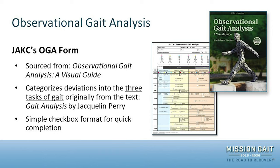Hi, I'm Will and I'm Tracy. For this lecture we are going to be going into some detail about the JA Casey Observational Gait Analysis Form. Go ahead and print off the form so you can follow along as Will takes you through some detailed descriptions of the different things on this form. The JA Casey Observational Gait Analysis Form comes from the book 'Observational Gait Analysis: A Visual Guide,' and JA Casey stands for the author's initials.